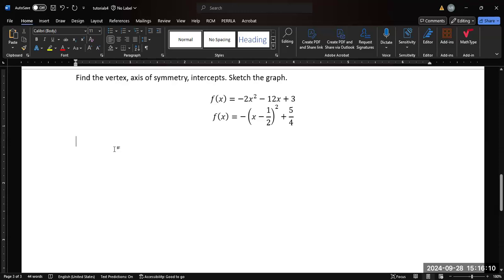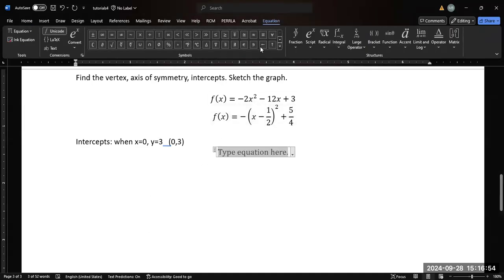From standard form, the easiest thing to do is to find the intercepts. The y-intercept is just what you get when x equals zero, which gives us our (0,3) point. And then for the other intercepts, we would need to factor, and I don't think this is going to factor, so we need to use the quadratic formula. Since this doesn't factor, I'm going to use the quadratic formula, which is this guy, if you remember.